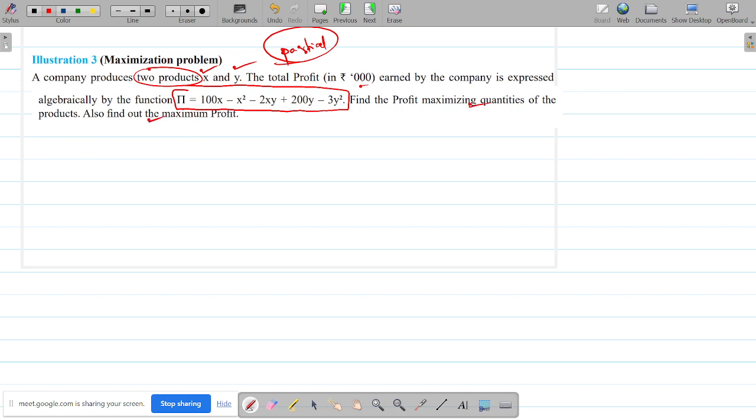Here we have two variables X and Y. First order derivative, second order derivative with respect to partial differentiation. Let me have the profit function π which is 100X minus X² minus 2XY plus 200Y minus 3Y².